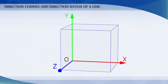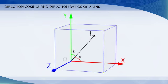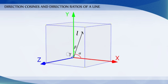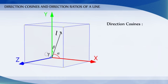If a directed line L passing through the origin makes angles alpha, beta, and gamma with the x, y, and z axes respectively, called direction angles, then the cosines of these angles, namely cos alpha, cos beta, and cos gamma, are called direction cosines of the directed line L.